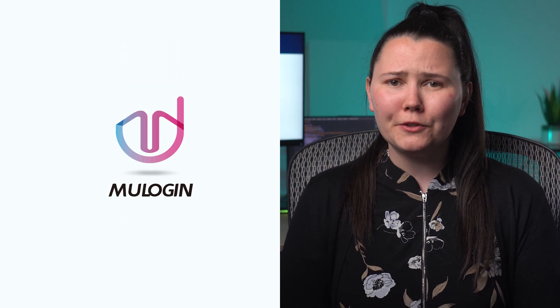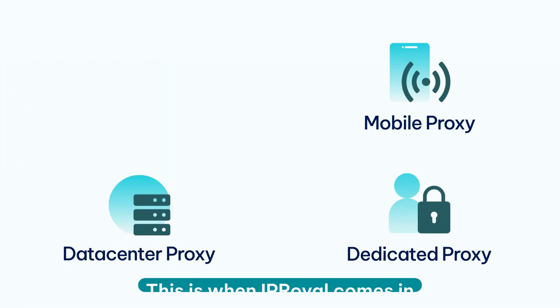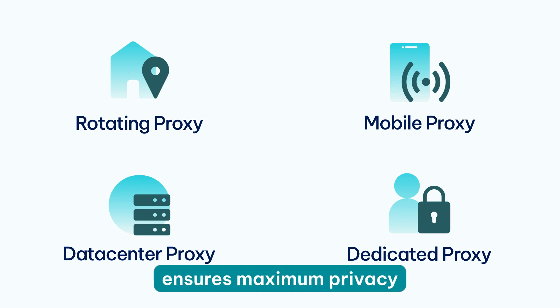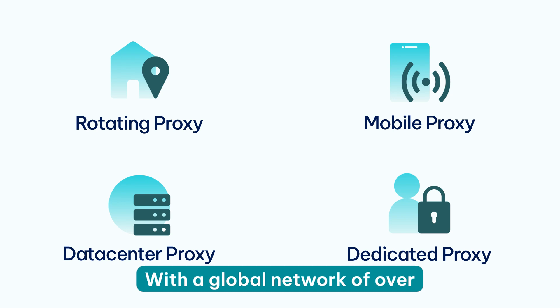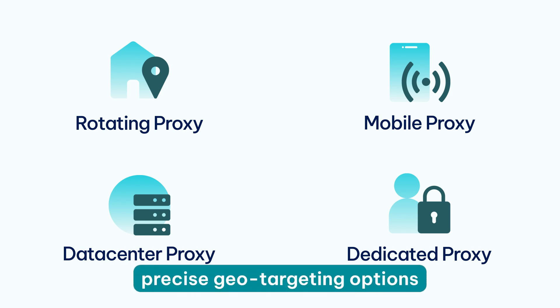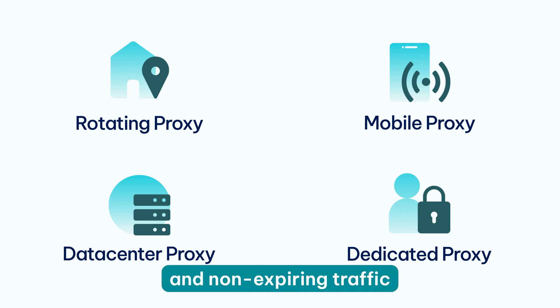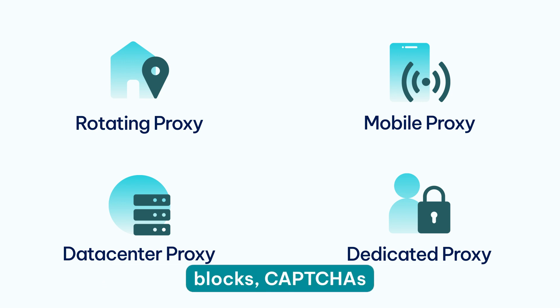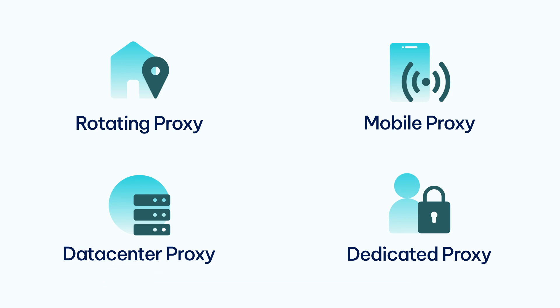However, it's all pointless if you use a single IP address for all your Mew Login activities. This is when IP Royal comes in. Combining this or any other anti-detect browser with our residential proxies ensures maximum privacy and smooth operation. With a global network of over 32 million ethically sourced IPs in 195 countries, precise geo-targeting options and non-expiring traffic will make your browser profiles look authentic so you can avoid bans, blocks, captchas and any other restrictions and obstacles.